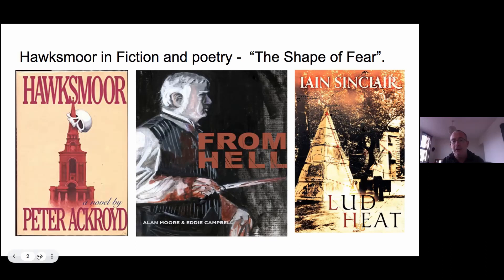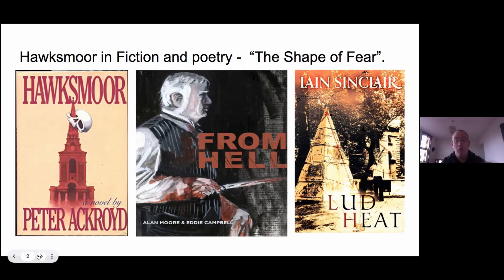Christ Church Spitalfields features very heavily in 'From Hell.' To the left is one of the early covers of the novel 'Hawksmoor' by Peter Ackroyd — that red church is Christ Church Spitalfields. The idea for Peter Ackroyd's novel came from the poem 'Lud's Heat' by Iain Sinclair. In 'Lud's Heat,' Sinclair points out that if you map Hawksmoor's churches they make a pattern, which he called 'the shape of fear.'